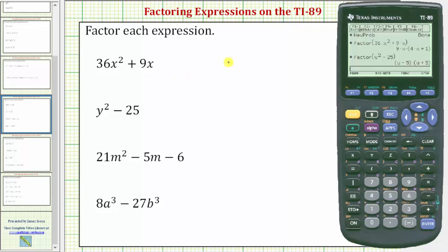The first step from the home screen is to use the new problem function. So from the home screen we press F6, which is second F1, option two for new problem. We can enter two or press the down arrow once, enter and then enter again.